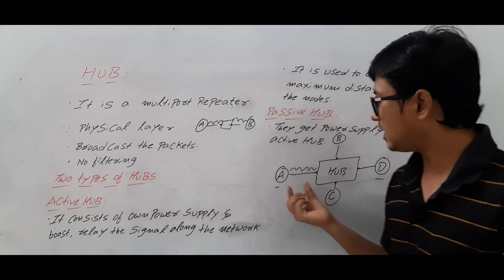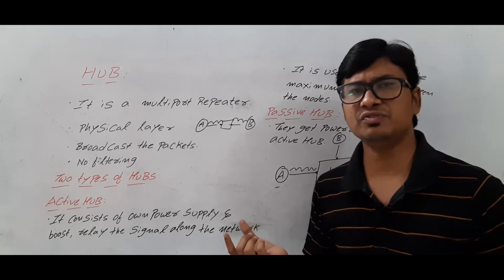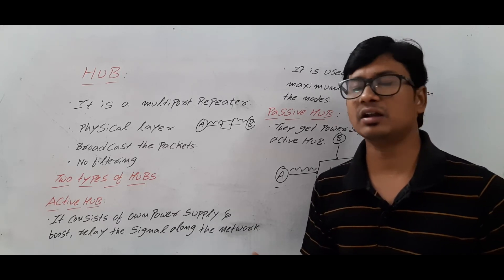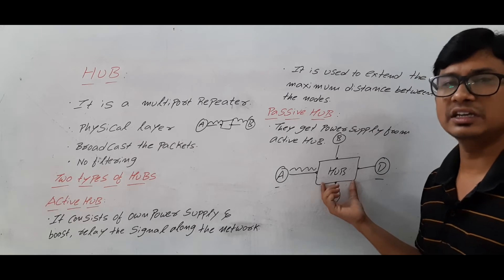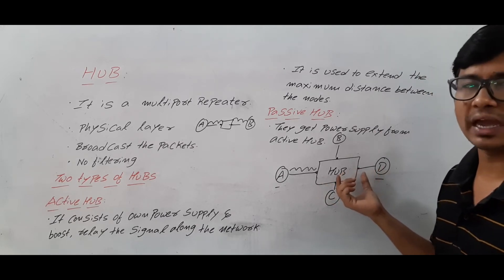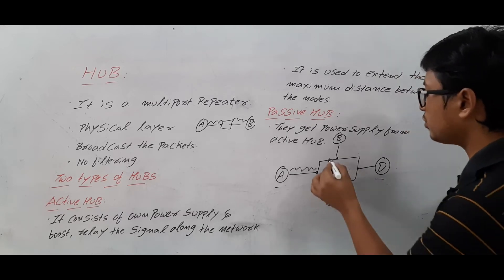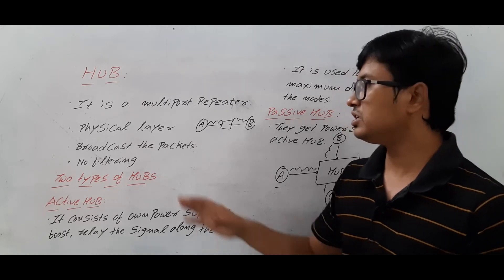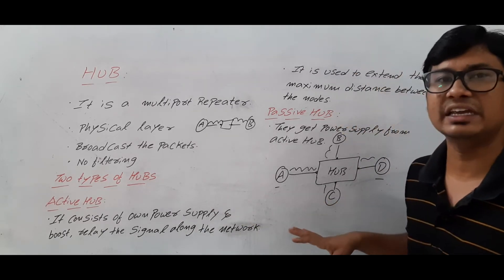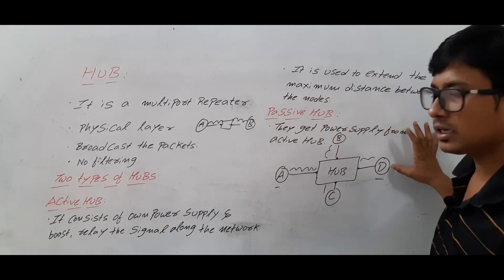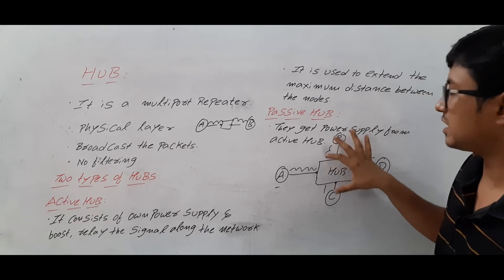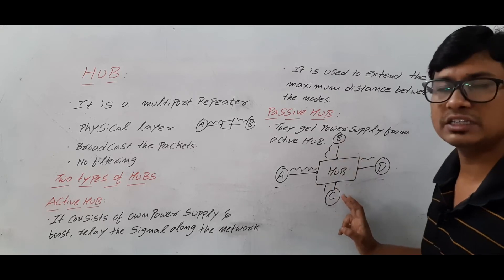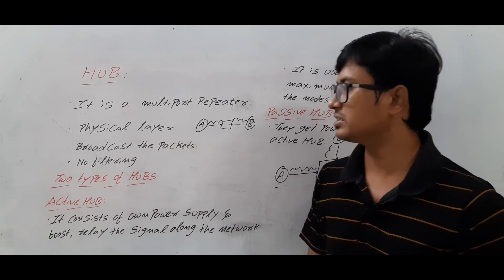Because it consists of only the physical layer, the hub cannot identify the destination address in the packet. Since it has to forward the packet to D but cannot identify the destination, it forwards the packet to everyone — this concept is called broadcast. The problem with broadcast is that network traffic will increase, because the source wants to send data only to the destination, but the hub is sending it to everyone.